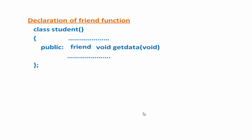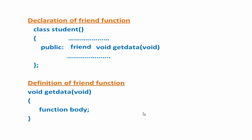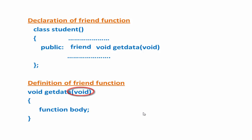Next we see how to define a friend function. The function is defined elsewhere in the program like a normal C++ function. It does not take either the keyword 'friend' or the scope resolution operator. To define a friend function, first write the return type, then the function name, and then within parentheses specify the parameters. Let's see a programming example to get this more clearly.